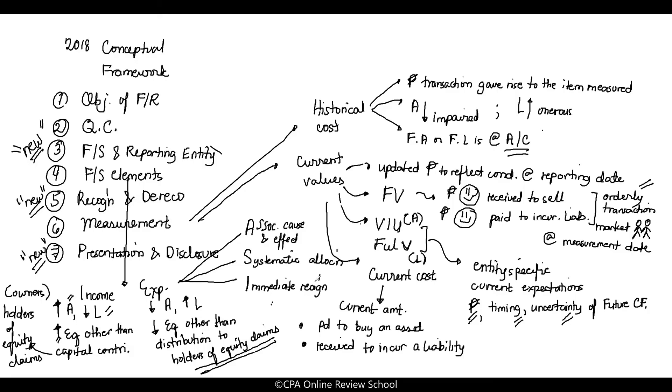Letter S, systematic rational allocation. Remember that. This appeared in the board exam. And letter I, immediate recognition. So what does that mean? Associating cause and effect is the matching principle. They believe there's expense because there's income. Or therefore, when there's income, there should be expense. Understand? Like delivery expense, cost of goods sold. There's expense because there's income.